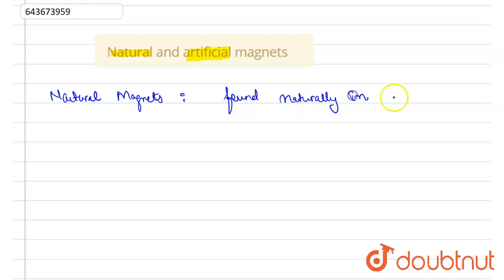Whereas artificial magnets are the ones that are manmade.